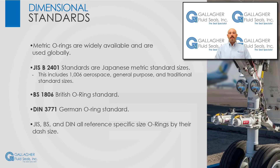Other international sizing standards exist beyond the U.S. AS568 system. O-rings are often called out by their metric dimensions — for example, a 16mm ID by 3mm cross section. The two critical dimensions of inside diameter and cross section give you enough information to identify the O-ring. The JIS B2401 Japanese standard, British BS 1806, and German DIN 3771 all reference specific size O-rings by their dash size. These tables are all available for download from GFS. It is possible that an O-ring called out by specific metric dimensions is a dash size for an international sizing system like JIS or DIN 3771.